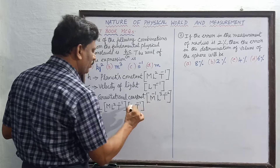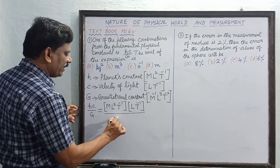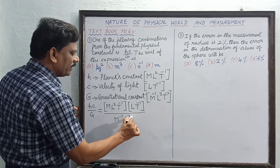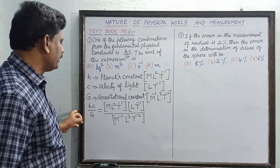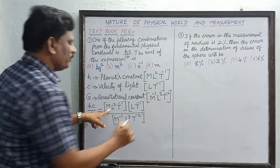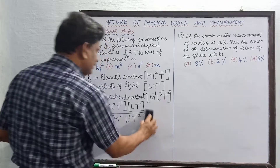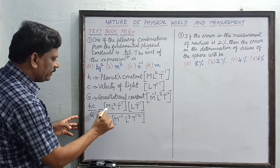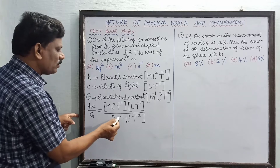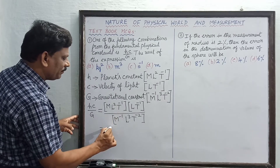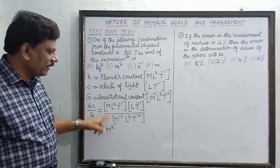Instead of the velocity of light c, I substitute L¹ T⁻¹. This is divided by M⁻¹ L³ T⁻² for the gravitational constant. Some powers get cancelled and readjusted. For M: we have M¹ in the numerator from h, and M⁻¹ in the denominator which shifts to the numerator as M¹, giving a total of M².